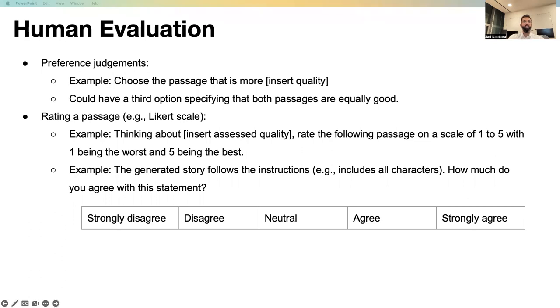Or if we want to assess the model's ability to follow instructions, we can give, for example, such a task: the generated story follows the instruction, including all characters. How much do you agree with this statement? Strongly disagree, disagree, neutral, agree, strongly agree. And by doing this kind of human evaluation, we hope to be able to capture aspects of an evaluation that is usually hard to be assessed by an automatic metric.